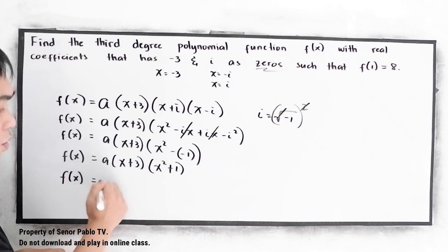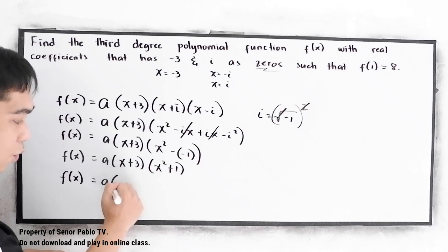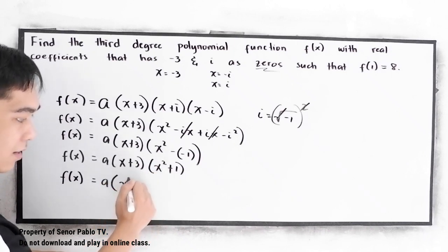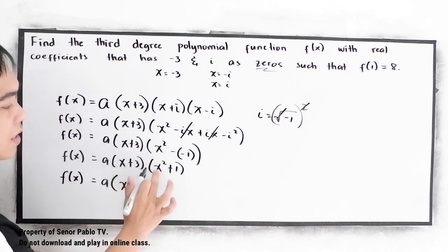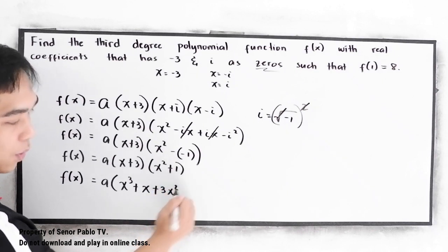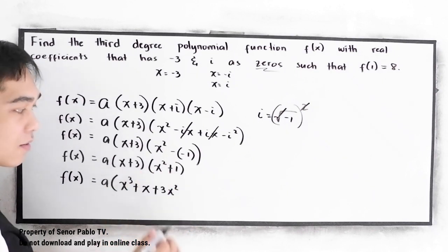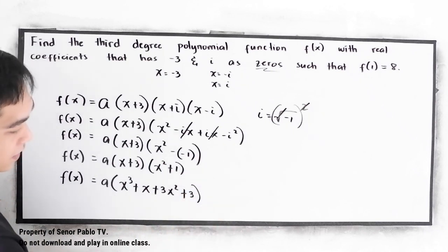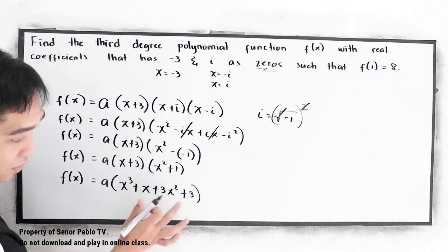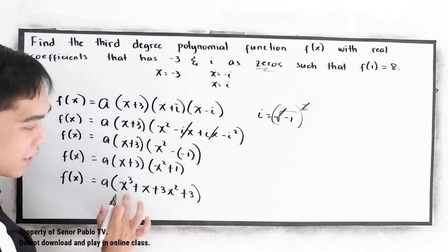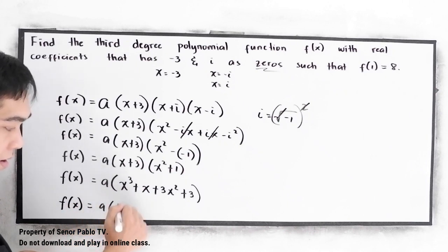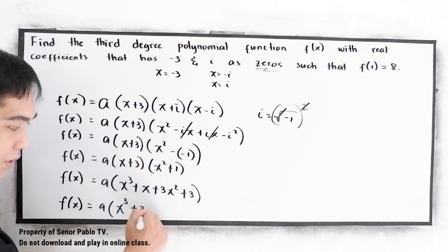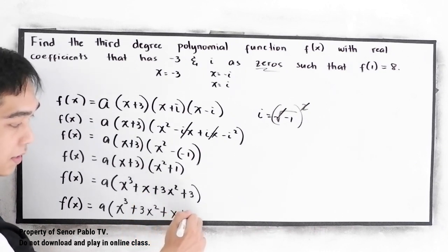Let us use the FOIL method again. So f of x is equal to a times: x times x squared gives x cubed, x times positive 1 gives positive x, 3 times x squared gives positive 3x squared, and 3 times positive 1 gives positive 3. Arrange the exponents from highest to lowest: f of x is equal to a times x cubed plus 3x squared plus x plus 3.